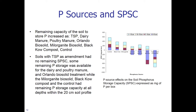Soils with TSP amendment had no remaining SPSC. Some remaining P storage was available for the dairy and poultry manure and the Orlando biosolid treatments, while Milorganite biosolid, black cow compost, and the control had remaining P storage at all depths within the 20 cm soil profile. It comes as no surprise that superphosphate leaves no remaining capacity, given its very high solubility, which compromised the entire 20 cm depth of soil in this rainfall simulation experiment.